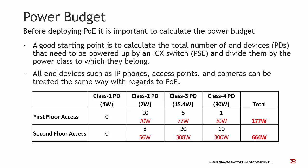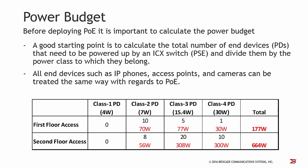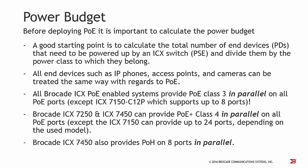Each device will reduce the maximum power budget of a switch, so it's very important how many ports in parallel a switch can supply with PoE. All Brocade ICX PoE-enabled systems provide PoE class 3 in parallel on all ports, with only one exception: the small ICX 7150 compact switch. The ICX 7250 and ICX 7450 can provide even PoE Plus class 4 in parallel on all ports, and the ICX 7150 can provide up to 24 ports in parallel depending on the used module. The ICX 7450 also provides High PoE in parallel on 8 ports.